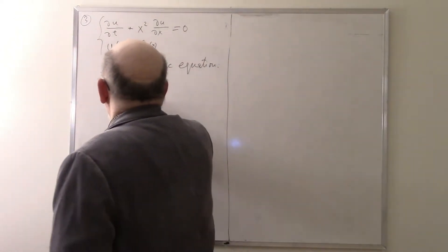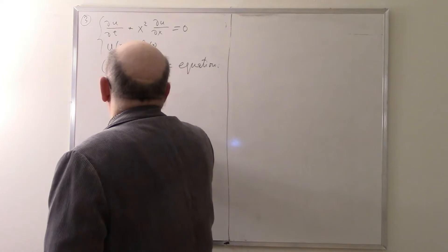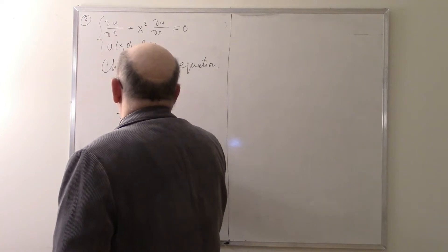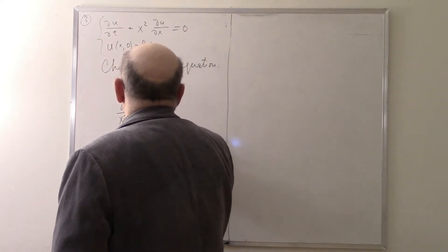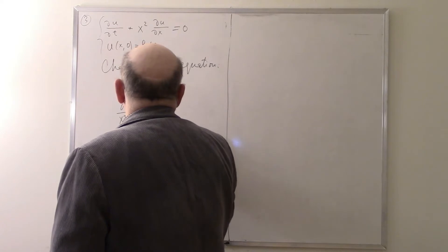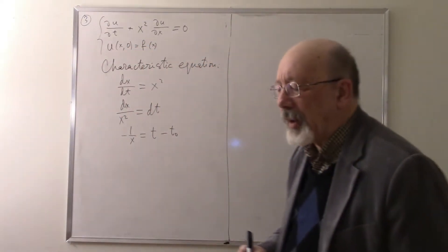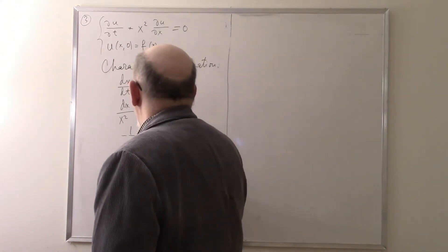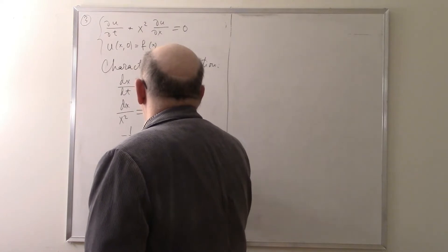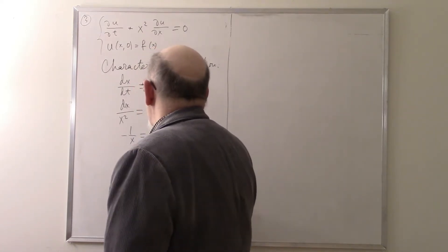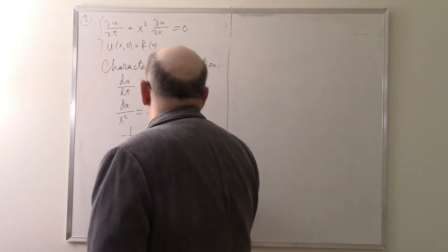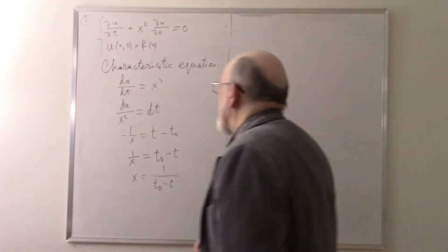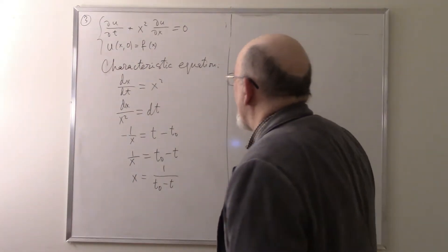From dx/dt equals x², we separate variables: dx over x² equals dt, so minus 1/x equals t minus t₀, which gives x equals 1/(t₀ minus t). This is the equation of the characteristics.